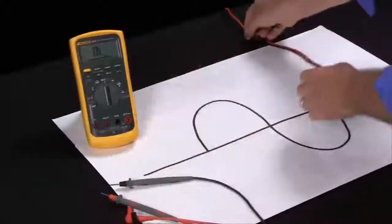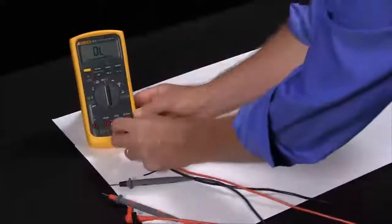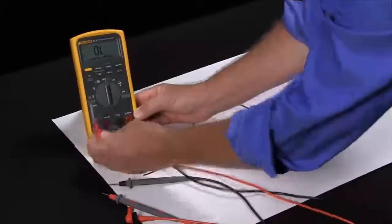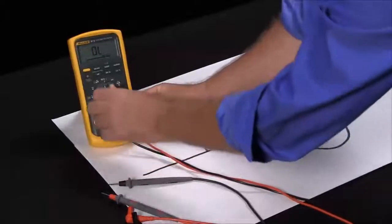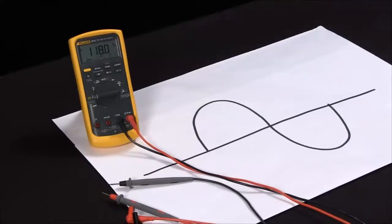This function though can be combined with several other functions within the Fluke 87 to help you troubleshoot some more complex problems. I'm just going to plug in, go to our sine wave. So here we have a 117 volt sine wave.